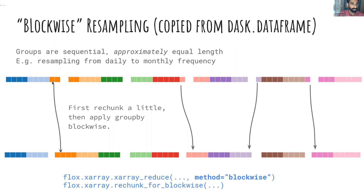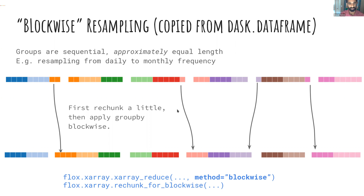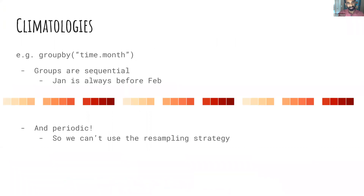With rechunking, the dark blue group is all in the first block, oranges in the second block, purples in their block. This involves a small amount of communication up front, then you apply the group-by operation blockwise — it's embarrassingly parallel and works really well. This is implemented with `method='blockwise'`, and there's a helper function to do the rechunking for you. But now let's come back to the climatology problem — group by time dot month — which is still a pain point.